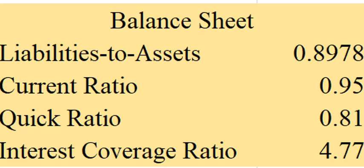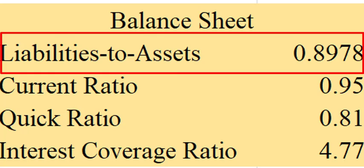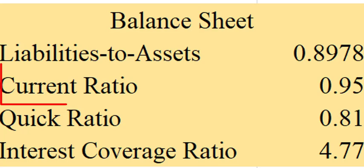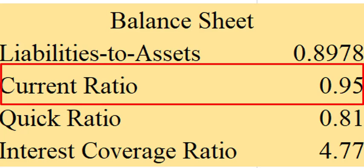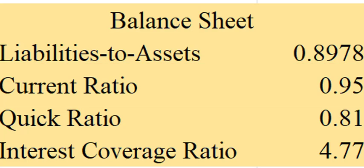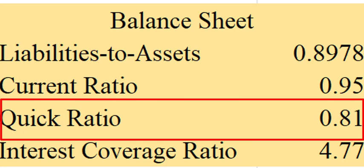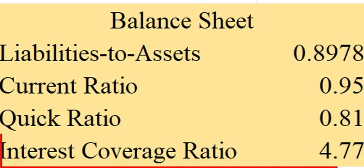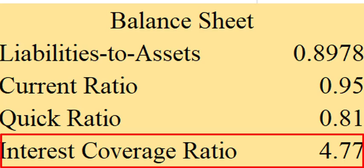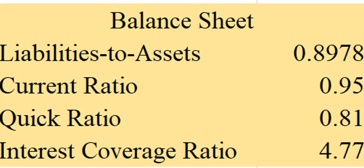Looking at the balance sheet for AbbVie, the liabilities-to-assets ratio is about 89%, close to 90% — that's quite high. That means for every dollar of assets, they have 90 cents in liability. The current ratio is just slightly less than one, meaning they just barely cannot cover their current liabilities with their current assets. The quick ratio is 0.8, which I don't like to see. And the interest coverage ratio is less than five, which tells you how many times you can cover interest expense with your pre-tax, pre-interest profits — for AbbVie, it's not too many times. They're cutting it a little close on a lot of these ratios.